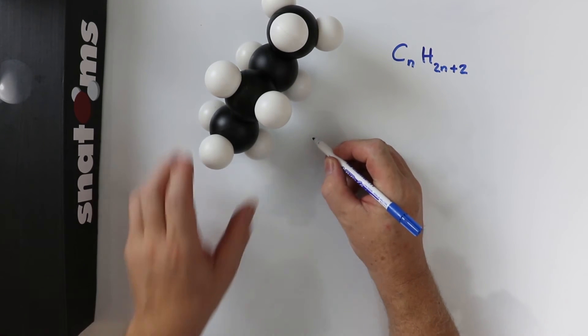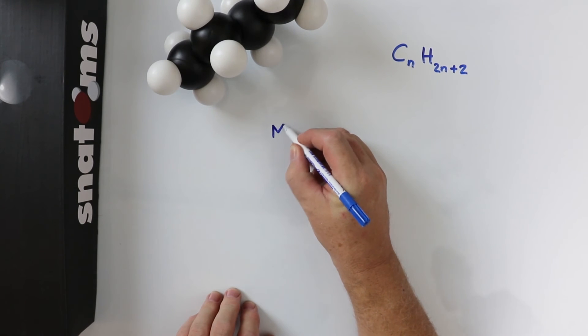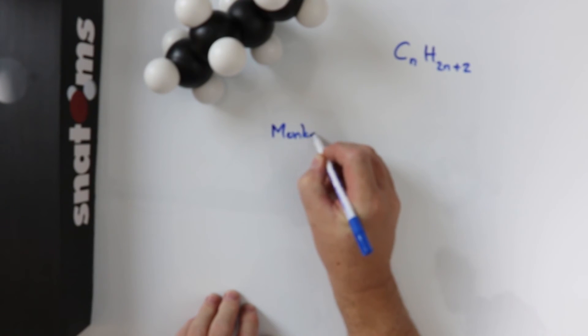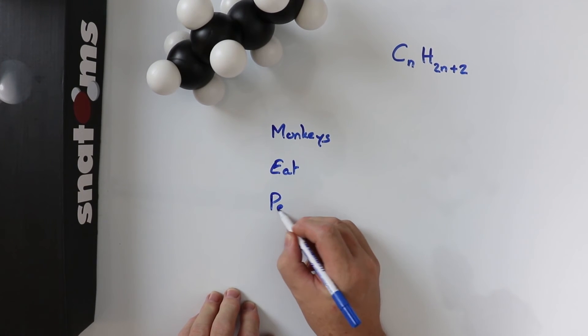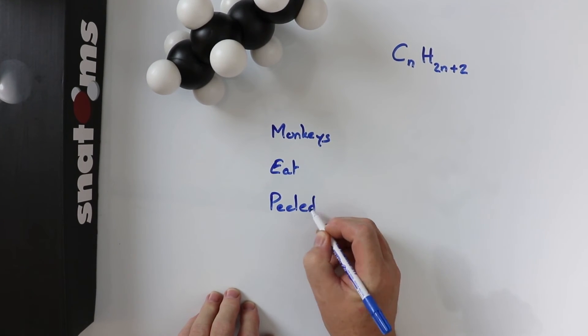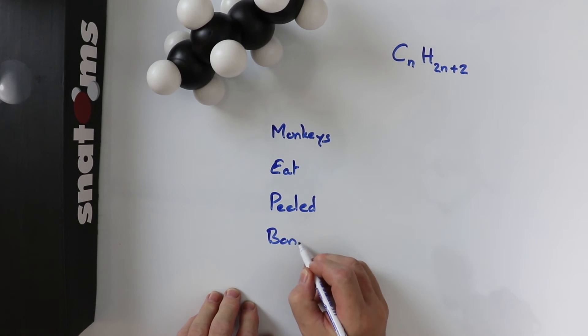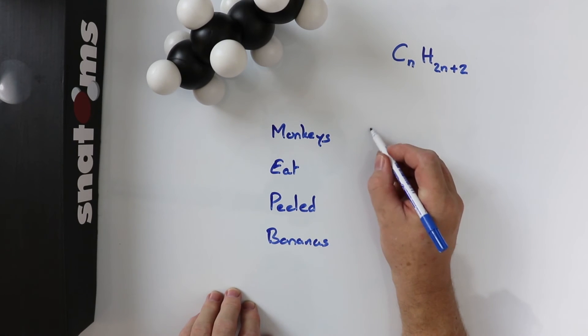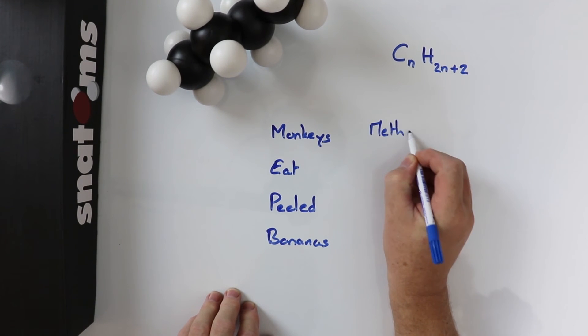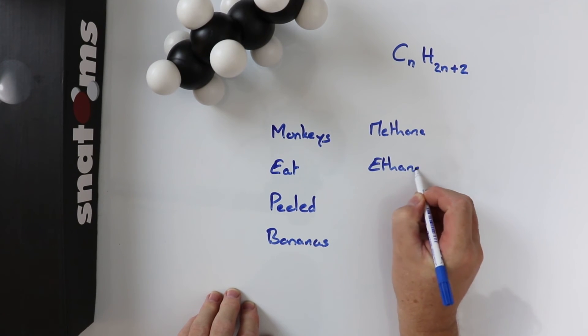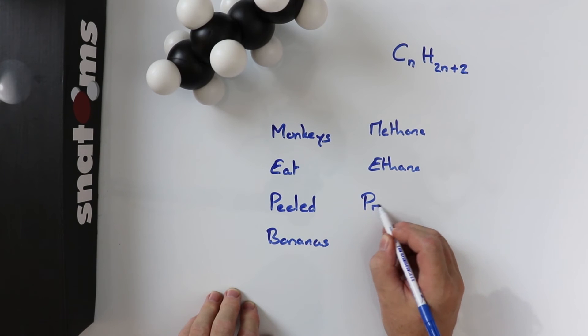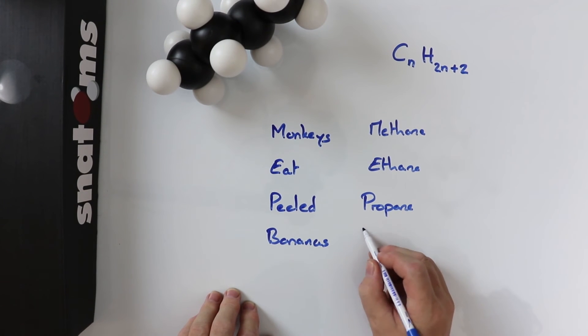Let's write out: Monkeys Eat Peeled Bananas. Monkeys - methane, Eat - ethane, Peeled - propane, Bananas - butane.